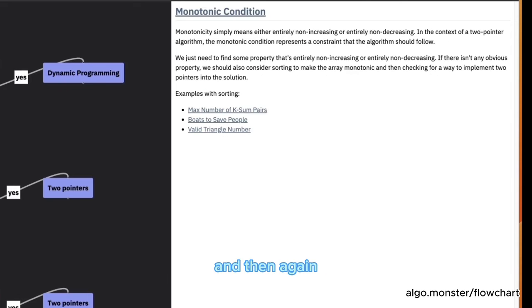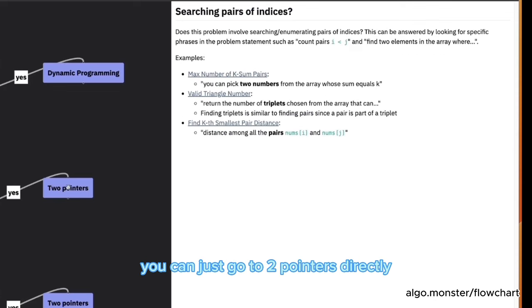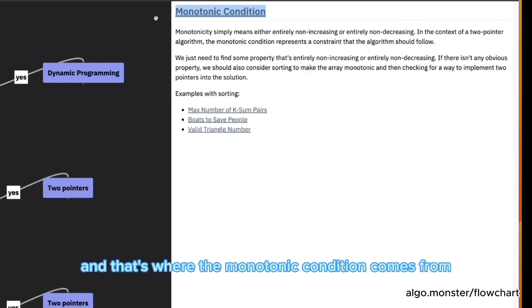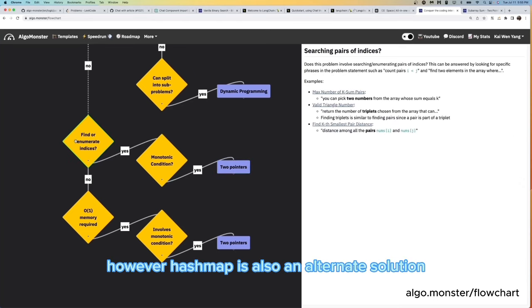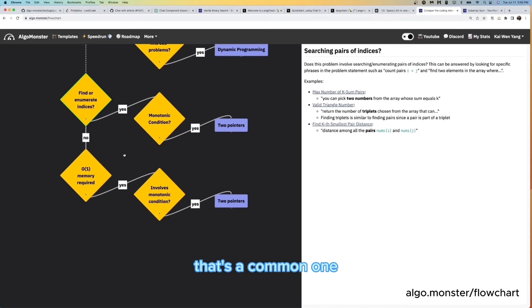Interesting. And then again, monotonic condition. And so in this case, you will be mostly two-pointer. If you don't have a branch out here, you can just go to two-pointer directly, right? I think for these type of problems, it might also be common where HashMap is used. For example, in the twosum problem, you could sort it. And that's where the monotonic condition comes from, and then run two-pointers. However, HashMap is also an alternate solution. That's a common one.